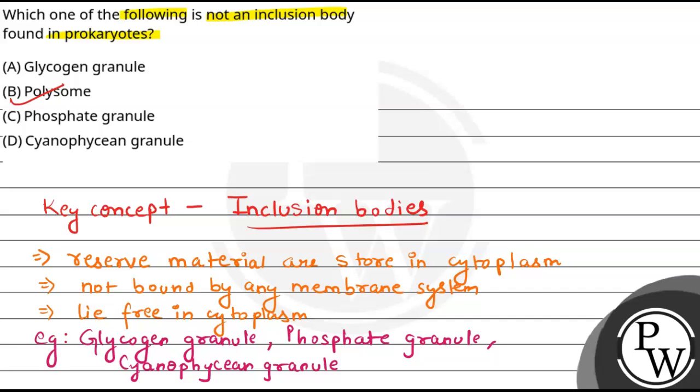Because what is polysomes? Polysomes can be defined as a chain which is formed when many ribosomes are attached to a single mRNA. So this is why our correct option B is here. You have understood. Best of luck. Thank you.